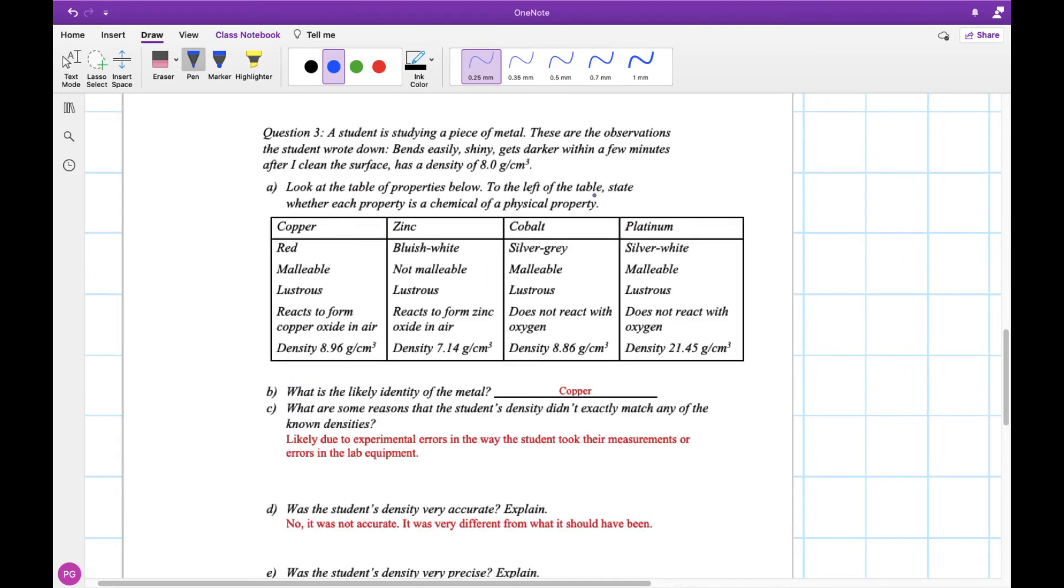Our question three here, we're looking at some observations that a student made, and they want to try and figure out which of these four metals it is. The observations are that it bends easily, it's shiny, it gets darker within a few minutes after I clean the surface, and we have a density over here as well. Now we want to figure out what the likely identity of the metal is. Our first one, bends easily, is related to malleability, and this means that it's malleable. If we look at our examples here, zinc's not malleable, so that crosses this one out.